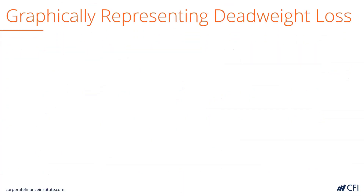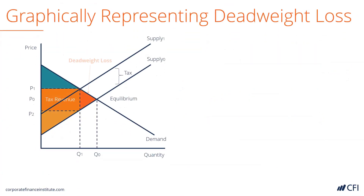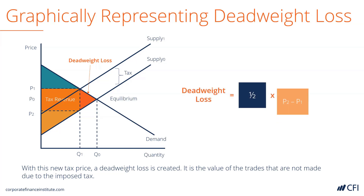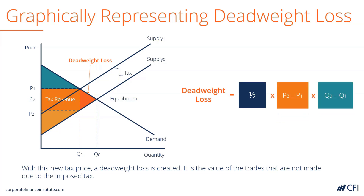Due to the added tax, a deadweight loss has been created, which is the value of the trades not being made. To calculate deadweight loss, we need to calculate the area of the dark orange triangle. So, we take 1/2 times (P2 minus P1) times (Q0 minus Q1).